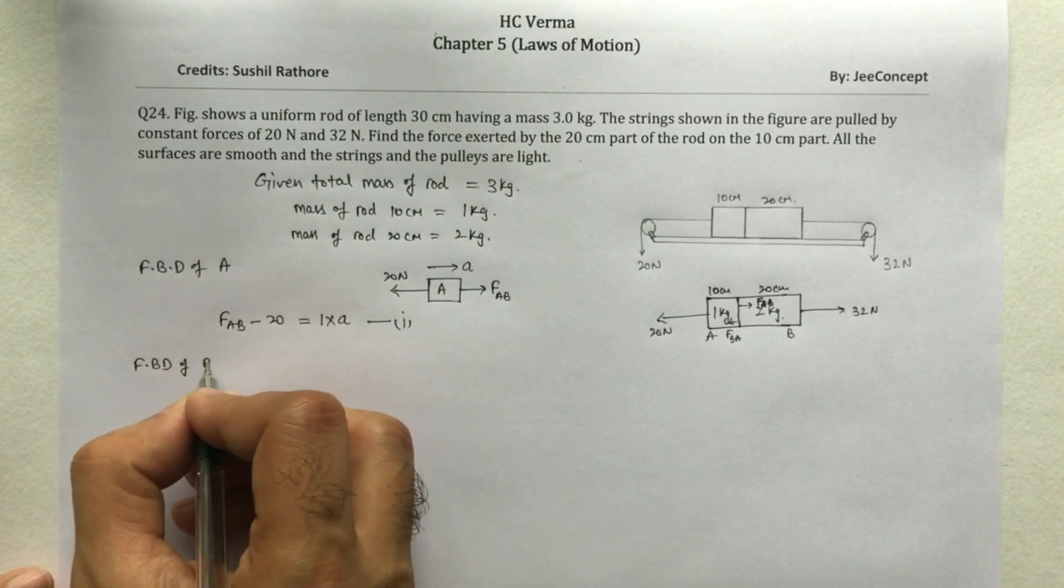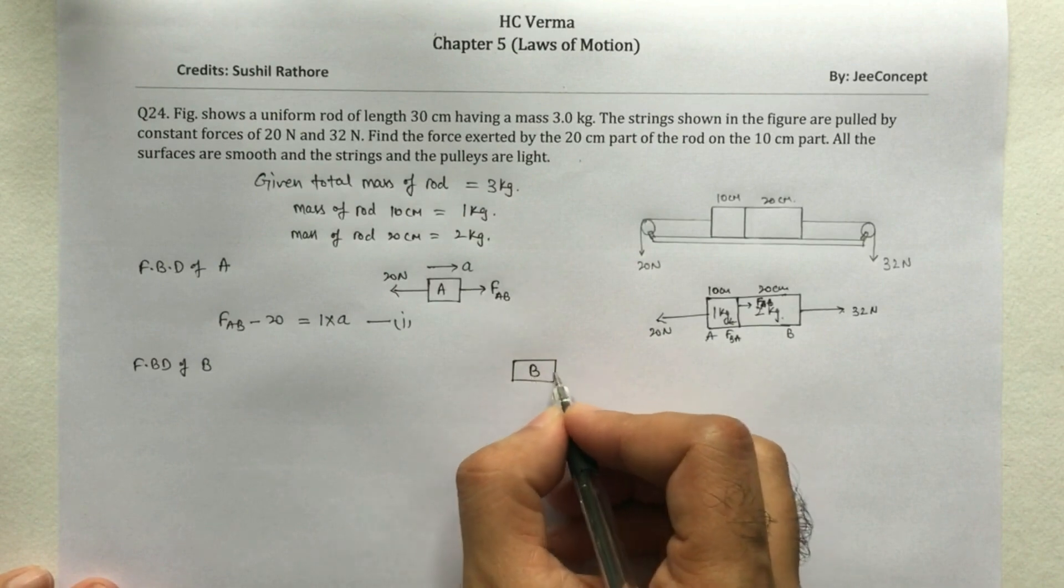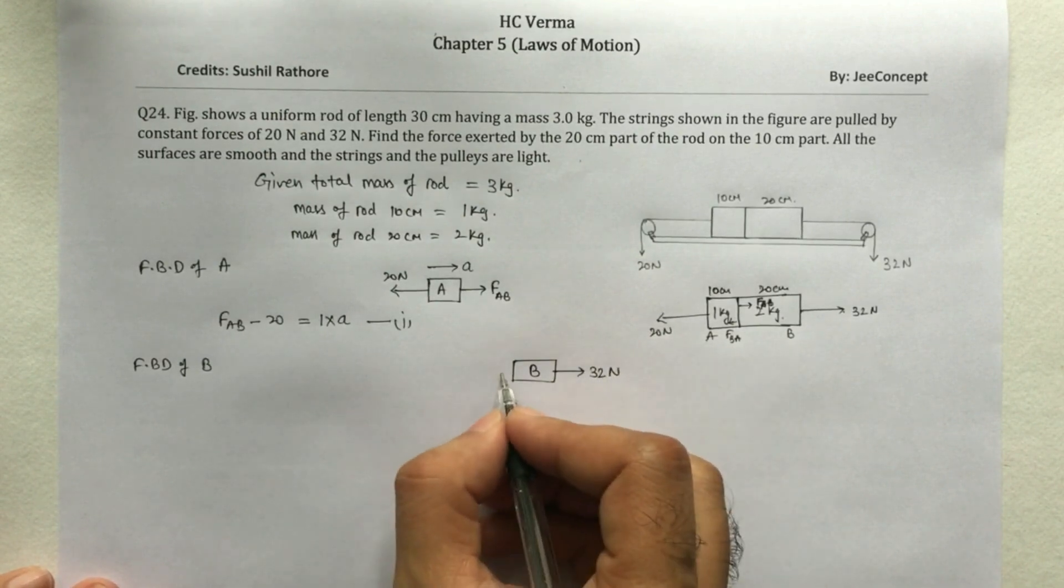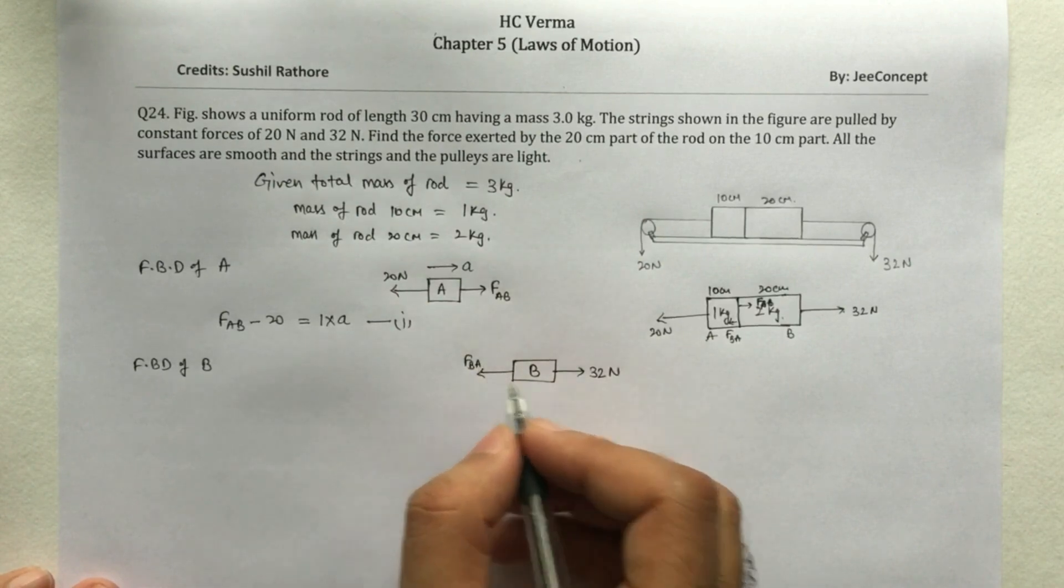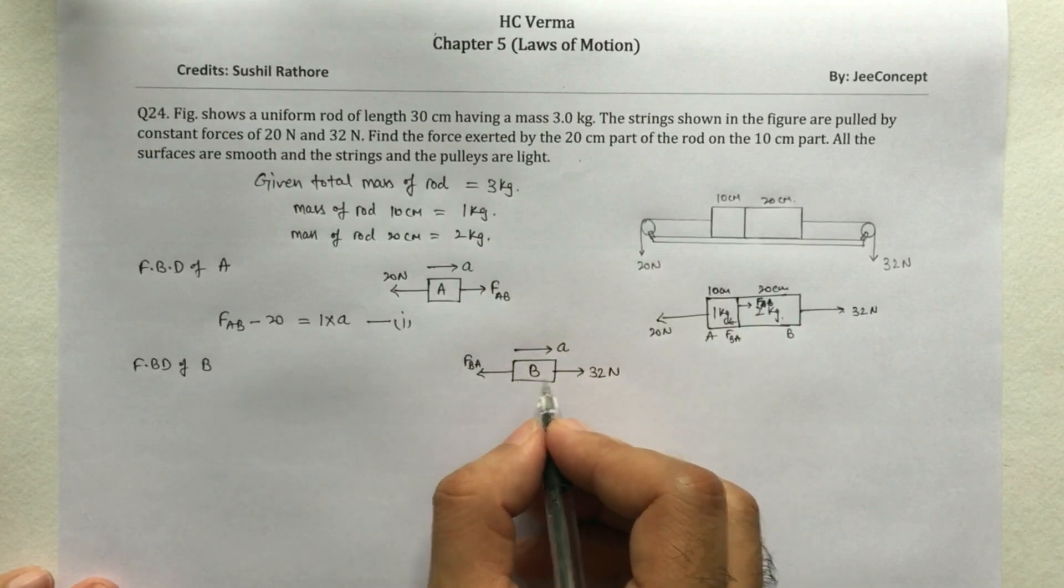Now FBD of B, say this is B, so there will be a 32 N force acting right hand direction and there is a force on B due to A in the left hand direction